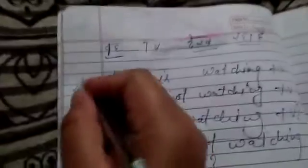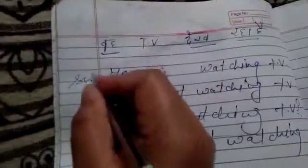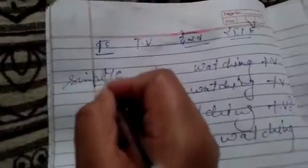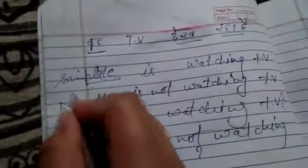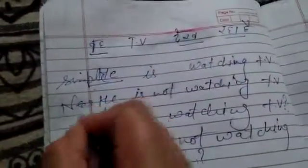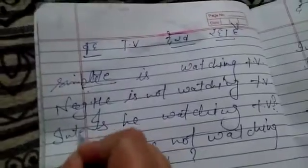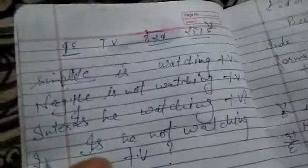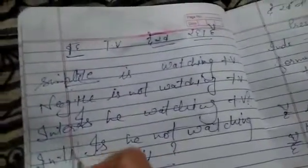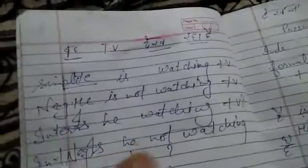This is simple. We have covered the affirmative (simple), negative, interrogative, and interrogative-negative forms of present continuous tense.